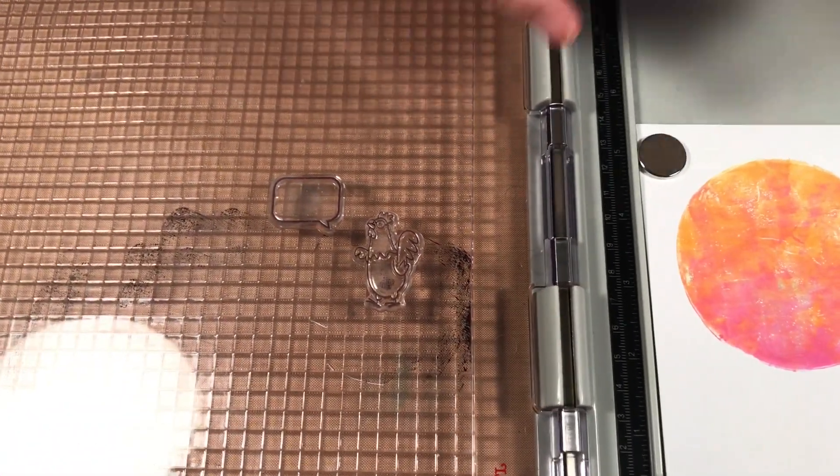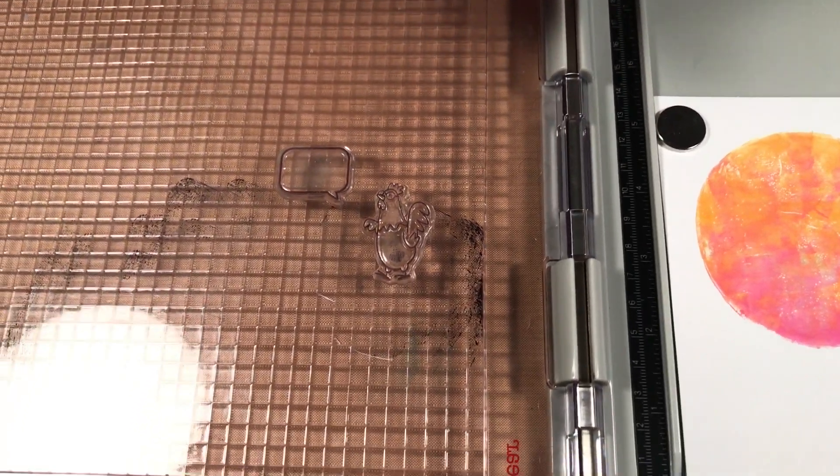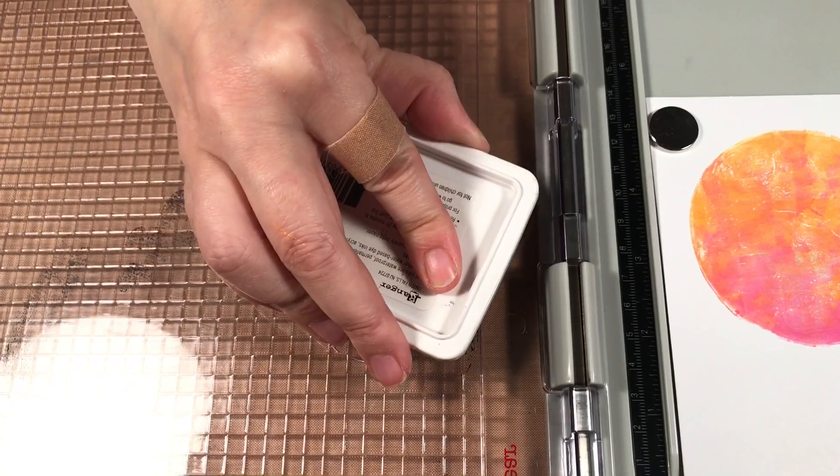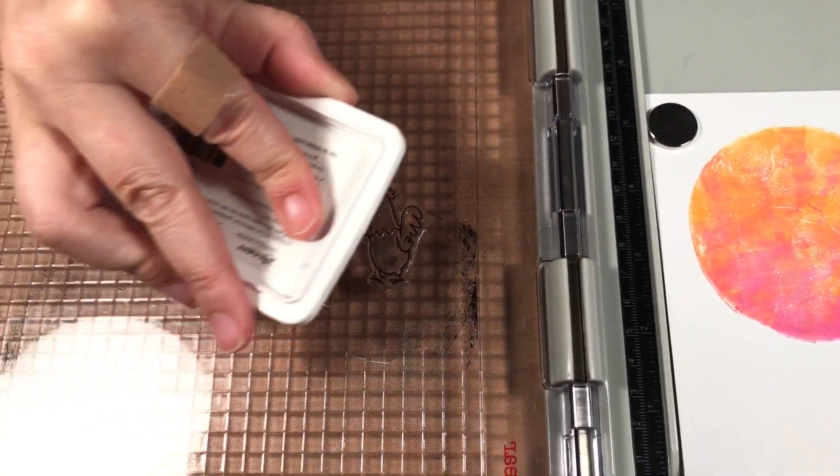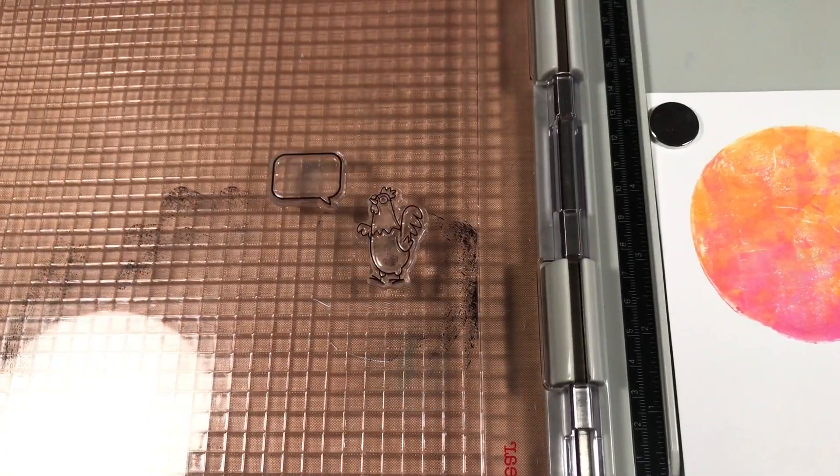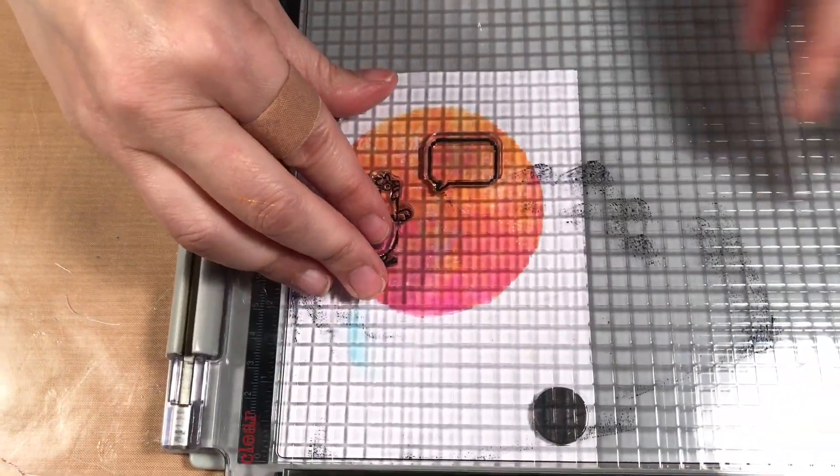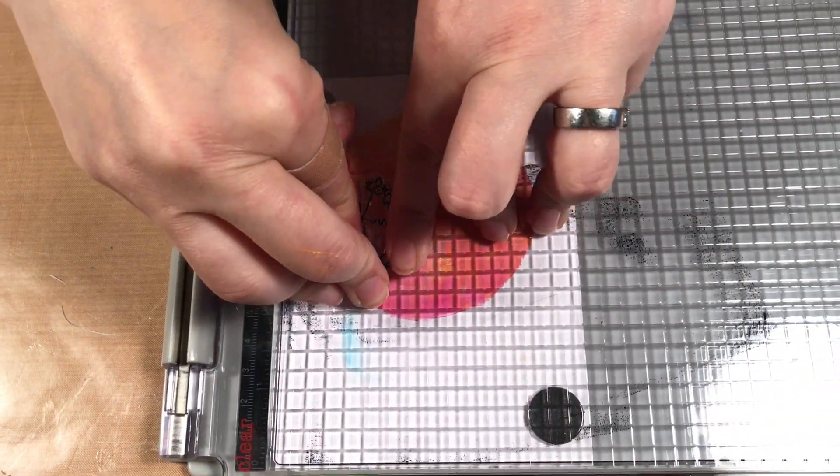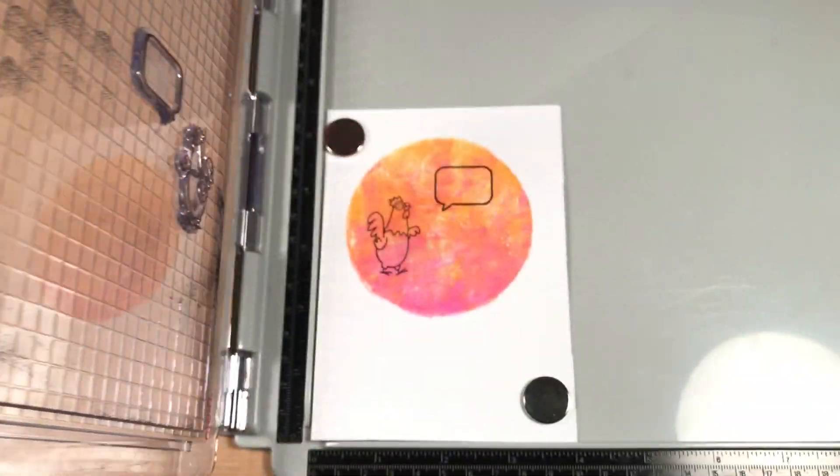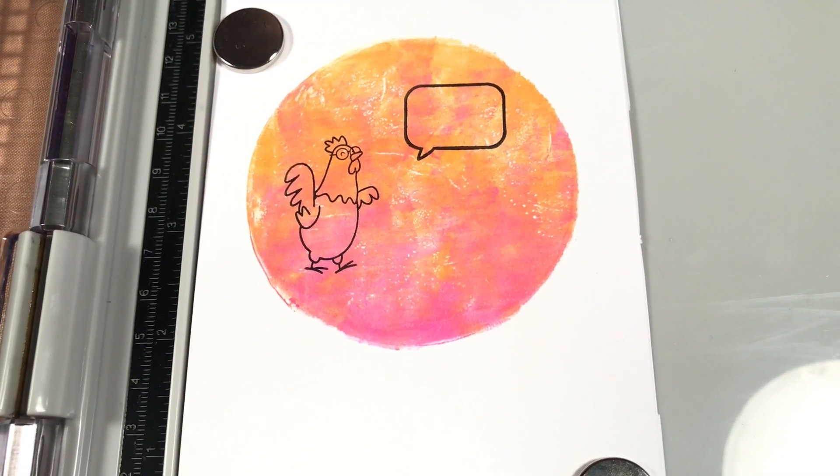I am using archival ink because I am stamping over the paint. Archival is great, it will stamp over a lot of surfaces. Dye ink or pigment ink may not work the same over acrylic paint. That's why I use archival ink for most of my stamping. So I inked it up, stamp it down, make sure it's there. And luckily for me it worked the first time so I don't need to re-stamp.